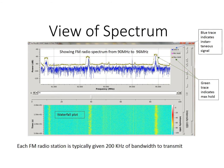The green trace is obtained using the max hold feature, which displays the highest recorded amplitude at each frequency. The lower plot is referred to as a waterfall plot, because the display scrolls down the window over time, similar to falling water. This view of the spectrum uses a color code to represent signal power or intensity.